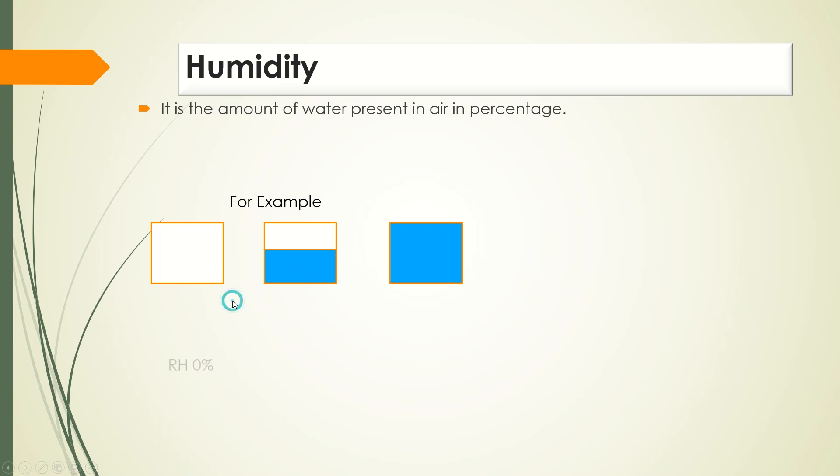In the first picture, humidity is 0%. In the second picture, humidity is 50%, and in the third picture, it is 100%. Now, does humidity depend on anything? Yes, humidity depends on air temperature. How? Let's simulate this.